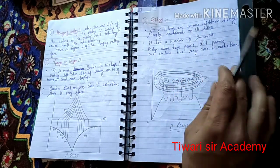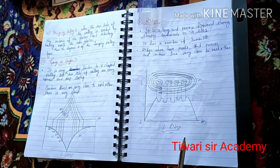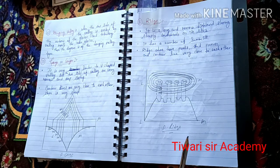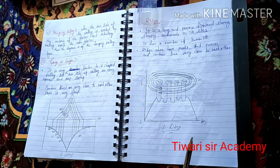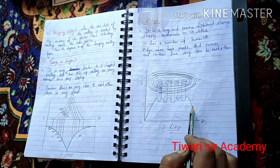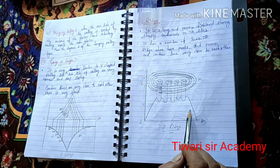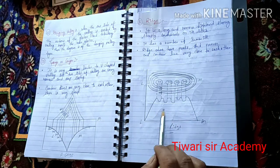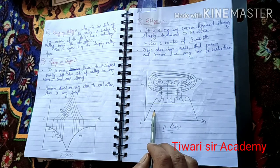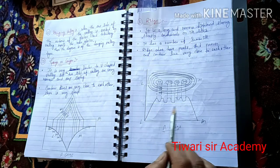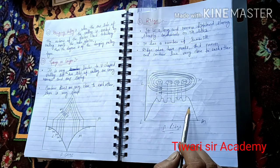This diagram represents gorge or canyon. Now moving on to ridge. Ridge is a long and narrow highland sloping steeply downwards on its sides. It has a number of summits, peaks, and passes, and the contour lines are very close to each other. It is a long and narrow highland where the slope is steep on both sides.